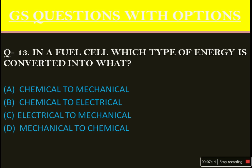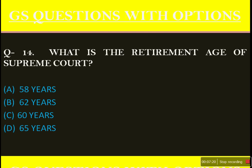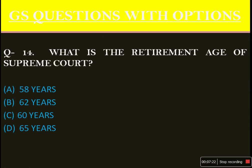In a fuel cell, chemical type of energy is converted into electric energy — very easy, everybody will get marks on this. What is the retirement age of Supreme Court judges? Also a very straightforward question. The answer is option D: 65 years.